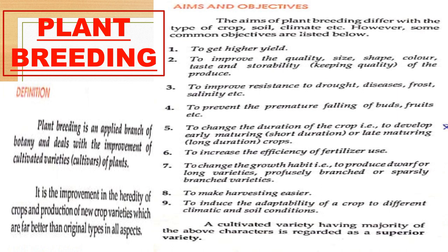Plant breeding is an applied branch of botany and deals with the improvement of cultivated varieties of plants. It is the improvement of heredity of crops and production of new crop varieties which are better than the original type in all aspects.